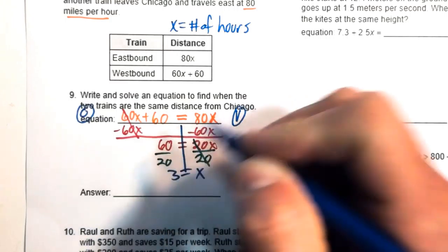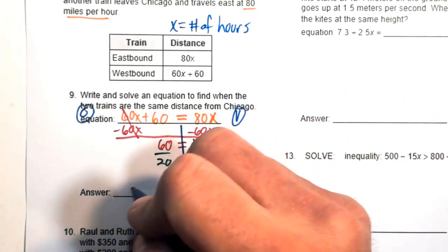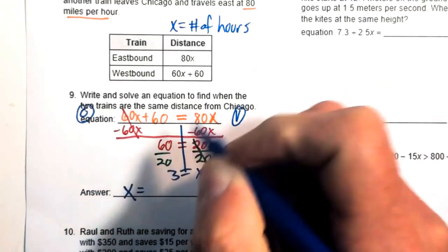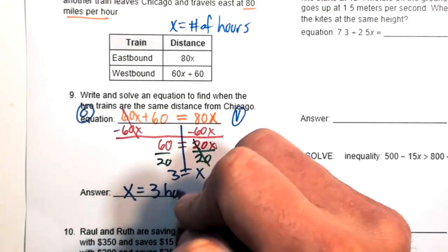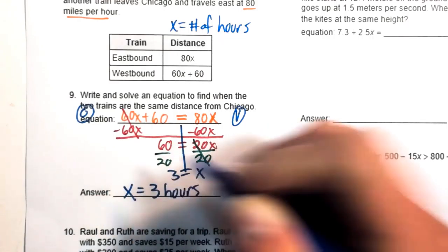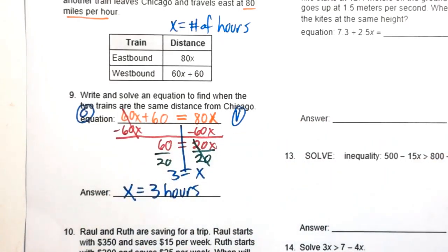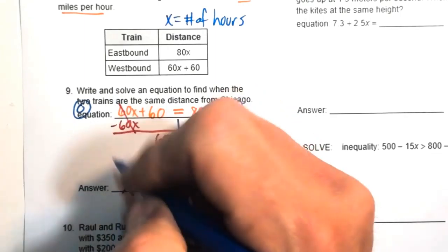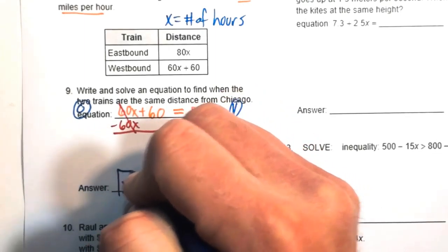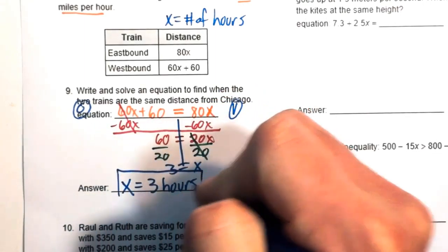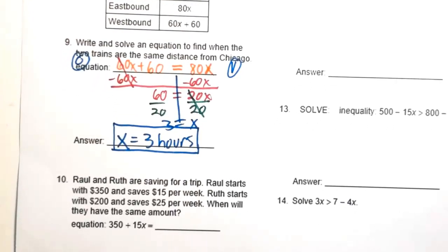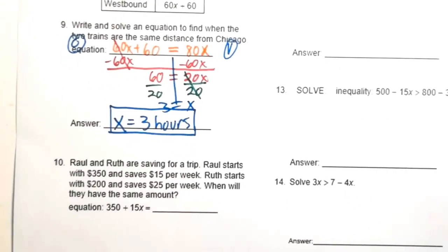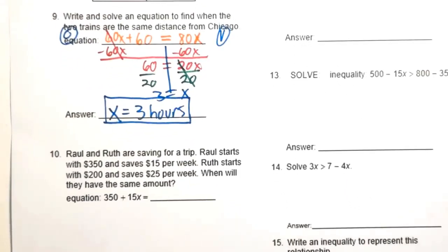x equals 3, meaning it will take 3 hours before the trains are the same distance from Chicago.